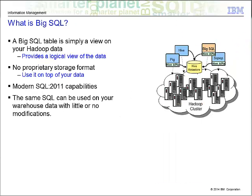What is BigSQL? Simply put, BigSQL is a logical view on top of your Hadoop data. The data resides in Hadoop, and all you have to do is use BigSQL to access it. There is no need to change the format or migrate the data out of Hadoop to do any work on the data. BigSQL supports modern SQL 2011 capabilities. So when you migrate your data into Hadoop, the same SQL can be used on your warehouse data with little or no modifications. That is one of the big benefits of BigSQL — no need to learn anything new, and you can use your existing queries.